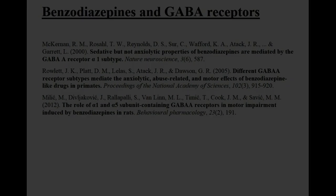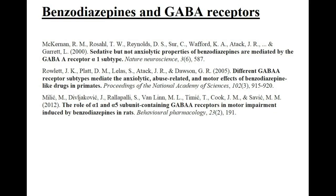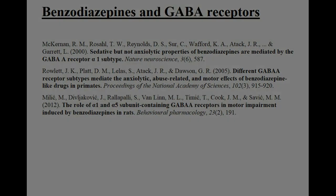For example, the alpha-1 receptor is highly concentrated in the cortex, the thalamus, and the cerebellum, and is largely responsible for sedation, amnesia, and anti-convulsion. Whereas the alpha-2 receptor is highly concentrated in the limbic regions like the hippocampus and the striatum, and is mostly responsible for GABA's effects on anxiety.